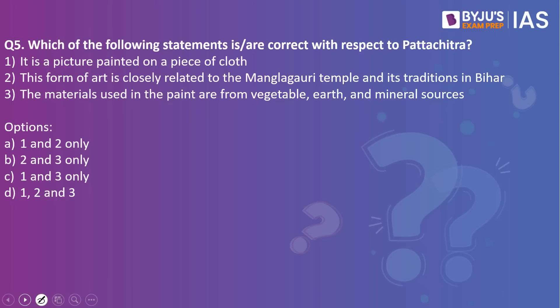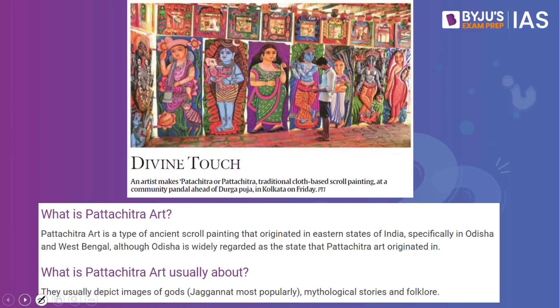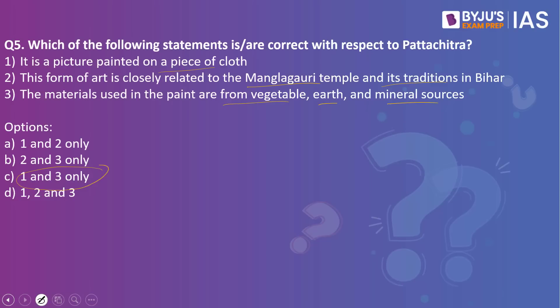Next question: which statements are correct with respect to Pattachitra? Statement one: it is a picture painted on a piece of cloth. Statement two: this art form is closely related to the Mangala Gauri temple and its traditions in Bihar. Statement three: materials used in the paint are from vegetable, earth, and mineral sources. The answer is one and three only. The word 'Patta' means cloth and 'Chitra' means picture — so Pattachitra is a picture painted on a piece of cloth.